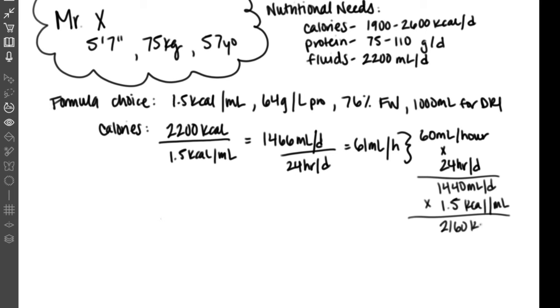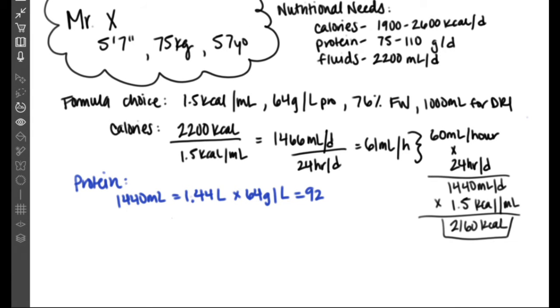To find out how much protein this formula is going to give Mr. X, we'll move on to the next equation. We know we have 1,440 milliliters he's getting each day. We'll take 1.44 liters and multiply that by 64 because there's 64 grams per liter. That will give us 92 grams of protein a day. And 92 grams is within our range of about 75 to 110 grams per day of protein. So that's also working well for us.